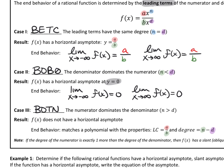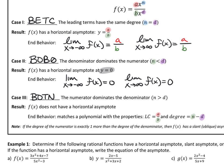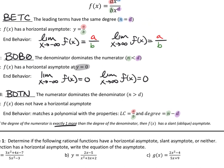There is a special case within BOTN. If the degree of the numerator is exactly one more than the degree of the denominator — bigger on top by one — then you have what's called a slant asymptote. We won't be finding the equation for slant asymptotes today because it requires long division, which we will get to later. But just knowing that a slant asymptote exists is important.